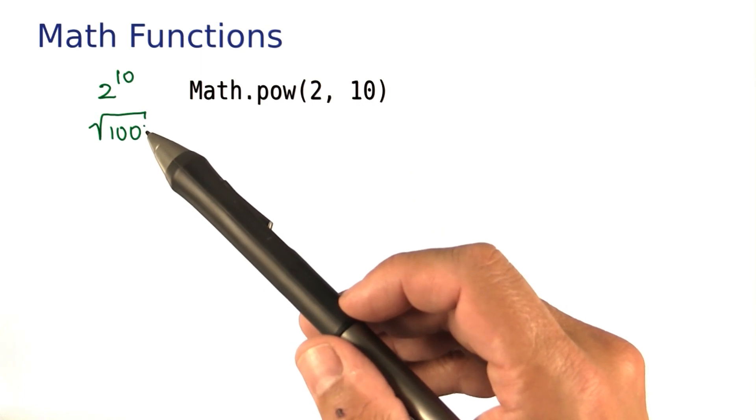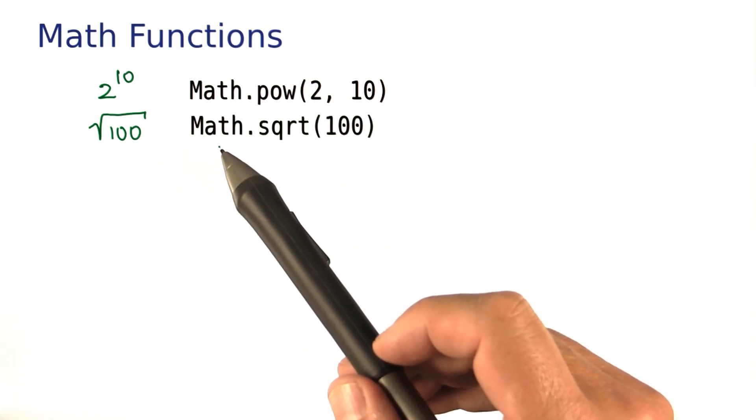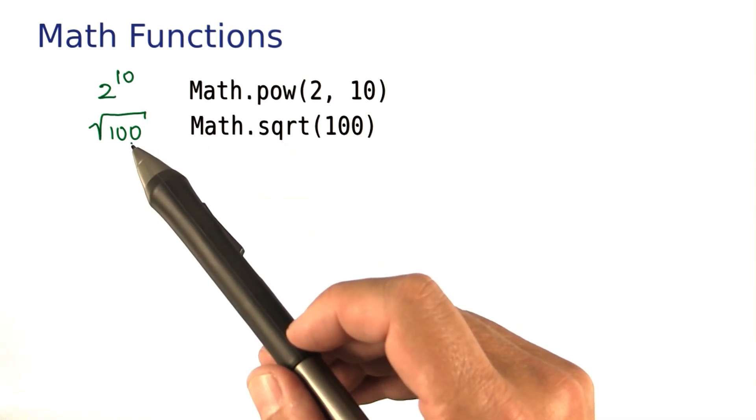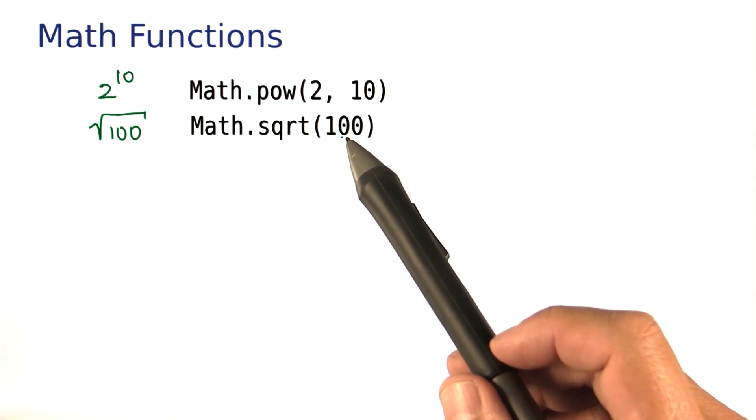If you need to compute a square root, you use the square root function. Again, it's in the Math class, Math.sqrt, and whatever goes inside the root symbol in math notation goes inside the parentheses here.